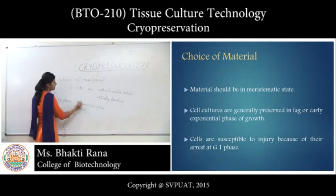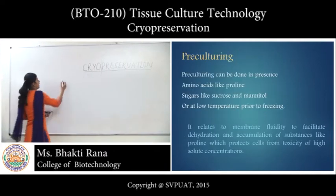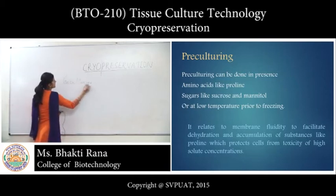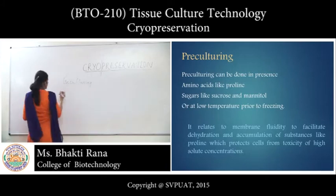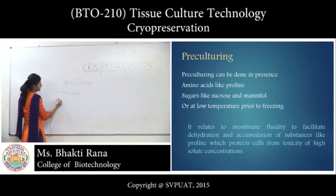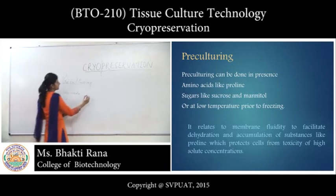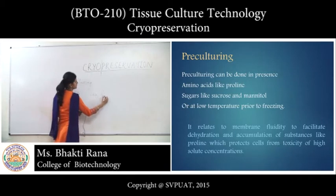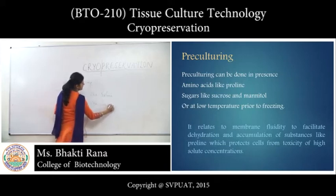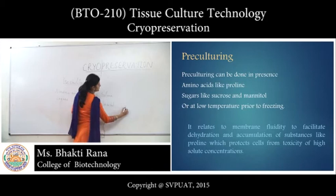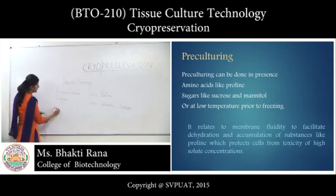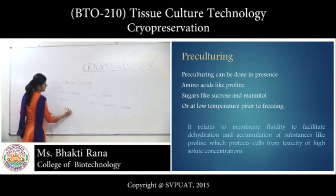If you arrest them at the lag phase or in the exponential phase, you are going to preserve them. After that comes pre-culturing. When you have chosen the materials, you have to pre-culture them. You can pre-culture in the presence of amino acids like proline, or in the presence of sugars like sorbitol and sucrose. Or you can simply keep them at low temperature before freezing.